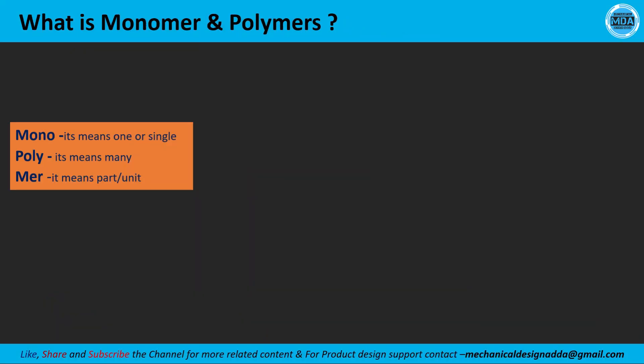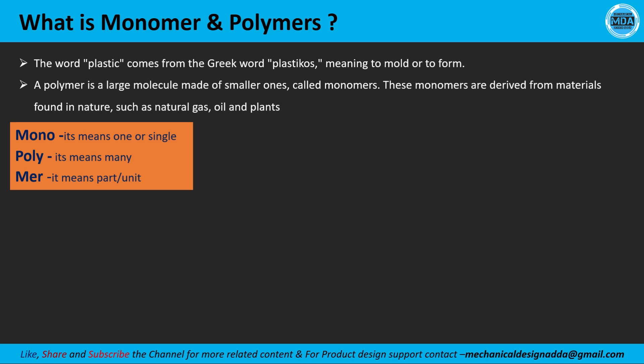Let's break down monomer and polymer. 'Mono' means one or a single unit, and 'mer' means unit — so monomer means single unit. 'Poly' means many or a number of, so polymer means many units or a number of units.